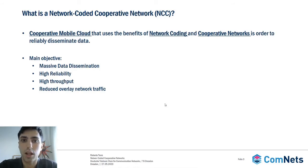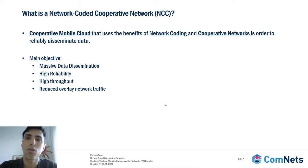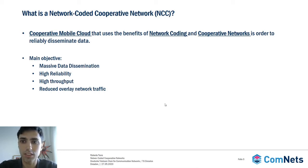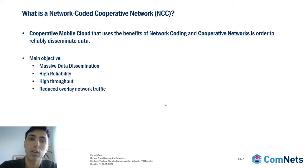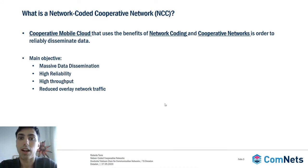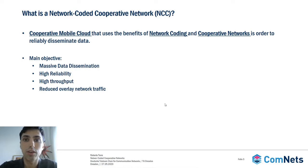Let's start with what a Network Coded Cooperative Network is. I will explain this more in detail later, but I just want to introduce what this system is so you can understand mainly how these networks appeared and what the reason for this system is. A Network Coded Cooperative Network is a cooperative mobile cloud that uses the benefits of network coding and cooperative networks in order to reliably disseminate data to the users. A mobile cloud is a set of users that are going to be able to cooperate together and use network coding.